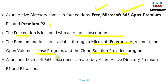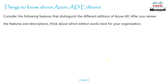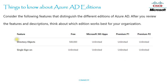Azure and Microsoft 365 subscribers can also buy Azure Active Directory Premium 1 and 2 online. Now let's go through the features we have to know about Azure editions. You can see here there are five columns: Feature, Free Edition, Microsoft 365, Premium 1, and Premium 2 edition.